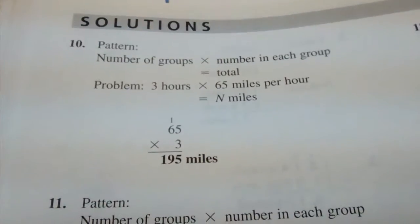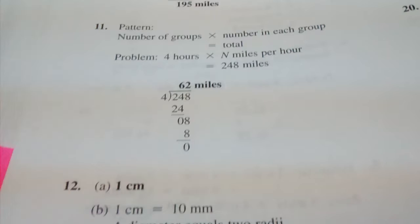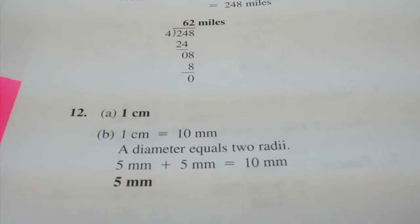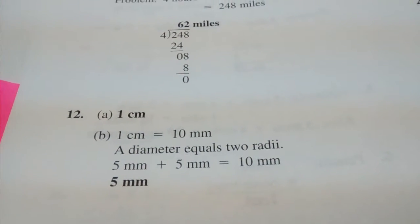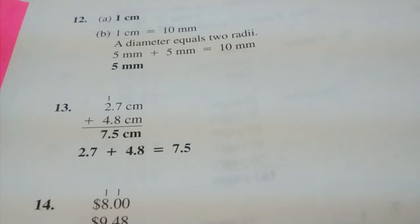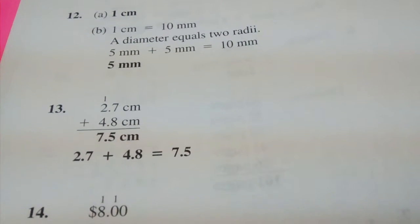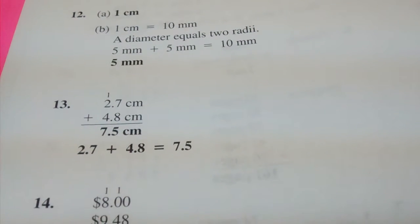Number 10, 195 miles. Number 11, 62 miles. Number 12, A, 1 centimeter. B, 5 millimeters. Number 13, 7.5 centimeters. 2.7 plus 4.8 equals 7.5.